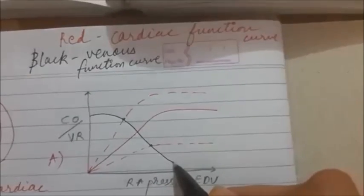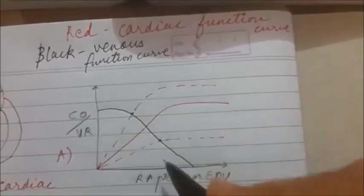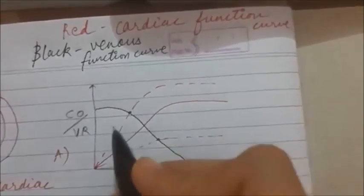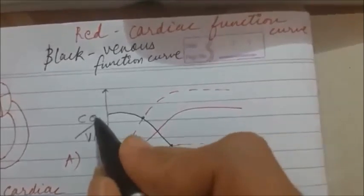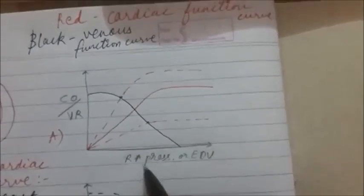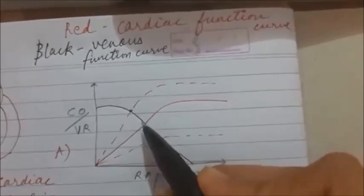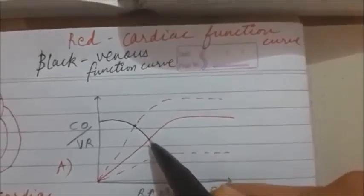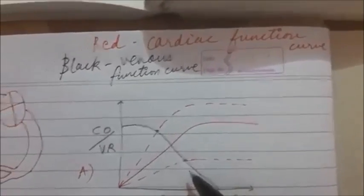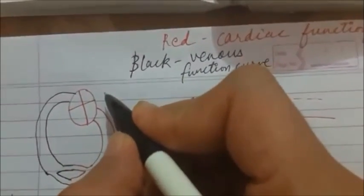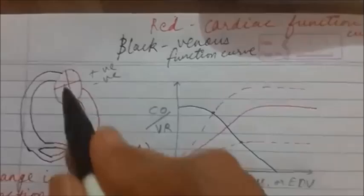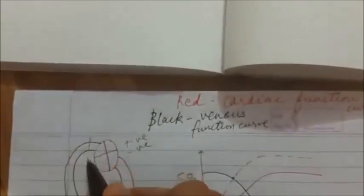There is no change in the venous function curve. So whenever you get a question with a graph showing a change in the cardiac function curve but no change in the venous function curve, just focus on the curves. The problem will always be in the heart — meaning there will be positive inotropy or negative inotropy. Graph A refers to a change in the function of the heart.